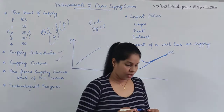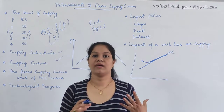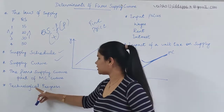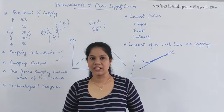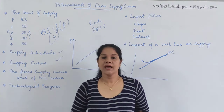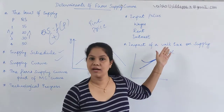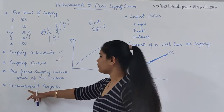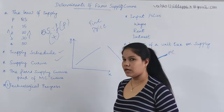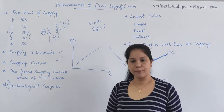Now, after this, we have two determinants which play a very big impact on the determinants of supply. There are so many determinants that influence supply, but right now we have taken only the important ones. According to the syllabus, the two main determinants have been given. The first one is technological progress.